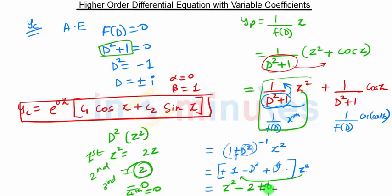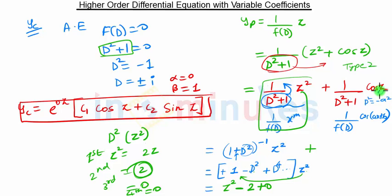Now we solve the second term: 1/(d² + 1) · cos(z). This is Type 2, where we substitute d² = -a². Here a = 1 (the coefficient of z in cos(z)), so we replace d² with -1. When we do that, the denominator becomes 0, creating a problem.